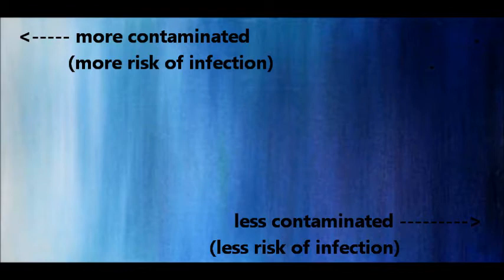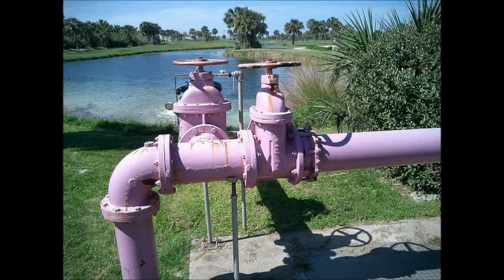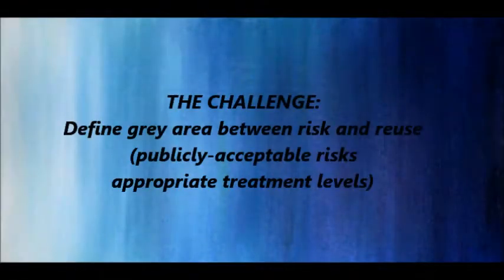On the right side, where the color is dark blue, we can imagine a scenario with extensive water treatment provided by a very expensive, state-of-the-art facility with efficient disinfection, essentially eliminating microbial risk. This water would be safe to use for irrigation, but the cost of treatment may not be affordable or feasible. The challenge with developing appropriate wastewater reuse policies is defining the grayish region in the middle, where an appropriate level of treatment reduces risks to levels that are both understood and accepted by the community.